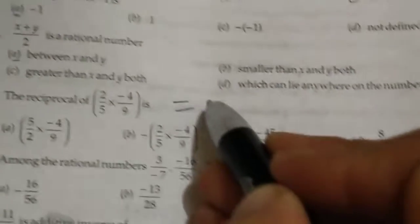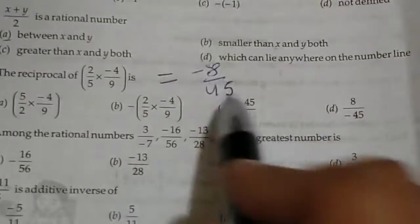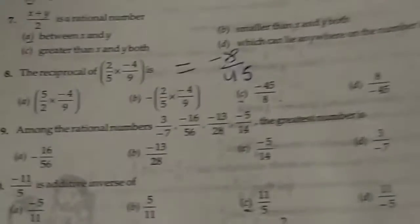The reciprocal of this number: we will simplify, this becomes minus eight nine fifths by forty five, so reciprocal becomes minus forty five by eight. In next portion you have to write which is the greatest number, so let us solve them.